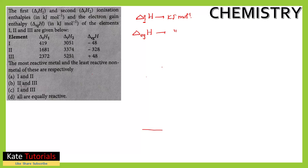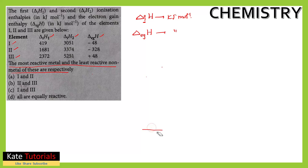They have given ionization enthalpy — first and second — and also electron gain enthalpy for three elements: one, two, and three. Based on this data, the question asks which is the most reactive metal and which is the least reactive non-metal among these three elements.